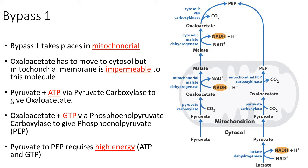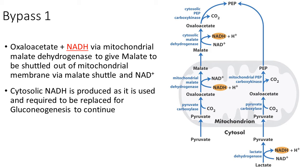Let us start with the first bypass reaction. Bypass 1 takes place in the mitochondria. Oxaloacetate needs to be moved to the cytosol, but the mitochondrial membrane is impermeable to this molecule, so it requires conversion to malate to be transported via the malate shuttle. Pyruvate plus ATP via pyruvate carboxylase gives oxaloacetate. Oxaloacetate plus GTP via phosphoenolpyruvate carboxykinase gives phosphoenolpyruvate, known as PEP. Pyruvate to PEP requires high energy in the form of ATP and GTP. Oxaloacetate plus NADH via mitochondrial malate dehydrogenase gives malate, which is shuttled out of the mitochondrial membrane via the malate shuttle, producing NAD⁺.